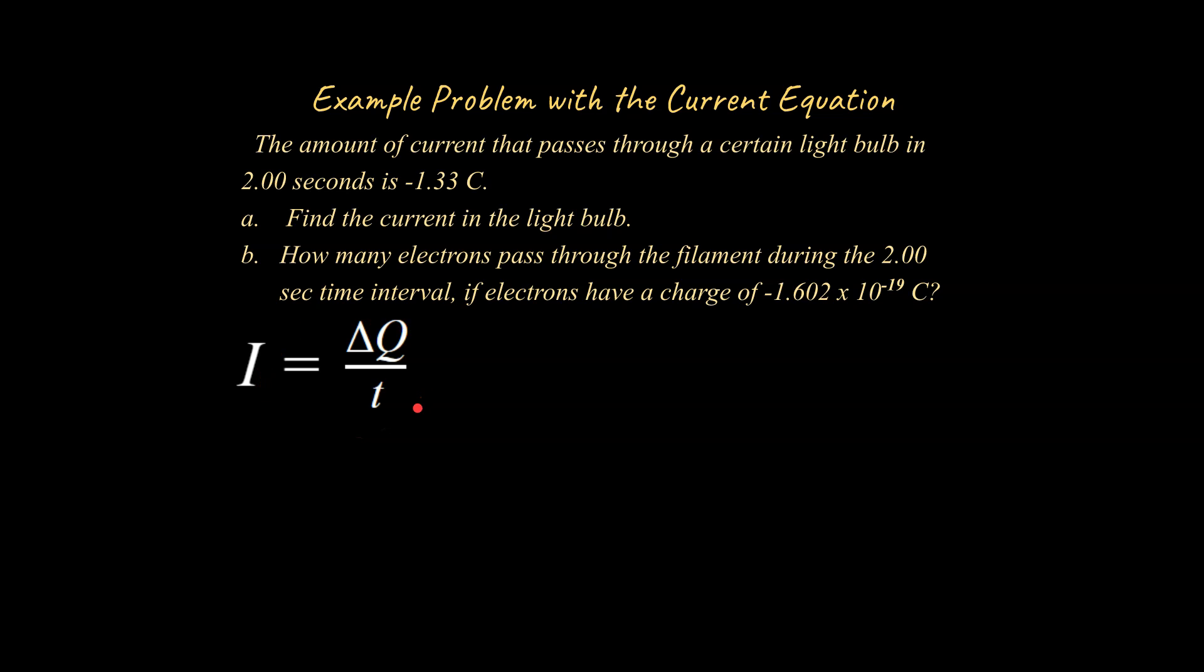Alright, so then we look at this and we say, alright, I is equal to delta Q over t and we have t and we have this delta Q. So we're going to go ahead and plug in our numbers and we end up with an answer of 0.665 amps. Pretty straightforward.